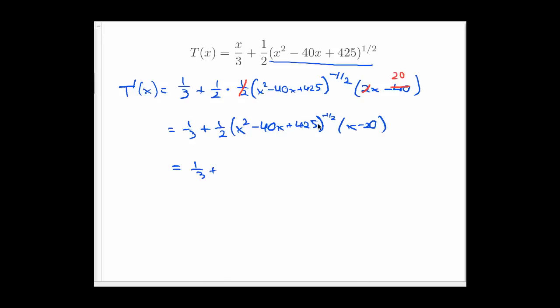So now I'm ending up with 1/3 + 1/2 times (x² - 40x + 425)^(-1/2) times (x - 20). Now let's clean that up in one more step here. 1/3 plus, this is really a fraction because of the exponent here. The numerator is x - 20, and on the bottom I've got a 2 because of the multiplied 1/2 times the square root of x² - 40x + 425. All right, and that's a cleaned up version of my derivative.